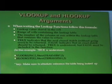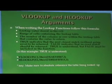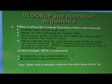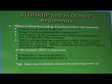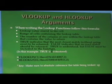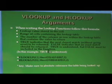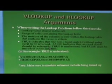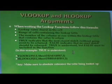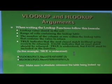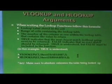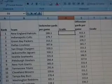When writing the lookup functions, follow this formula. First, you put the lookup value stored in this cell. Next, the range of cells containing the lookup table. Then you put the number of the column or row within the lookup table that contains the value to return. After that, you indicate whether it is true or false. If it's true, it means the next closest match without going over is to be returned. If it is false, it indicates that an exact match should be returned. True is understood, but false must be included in the function. In our example, true is understood.